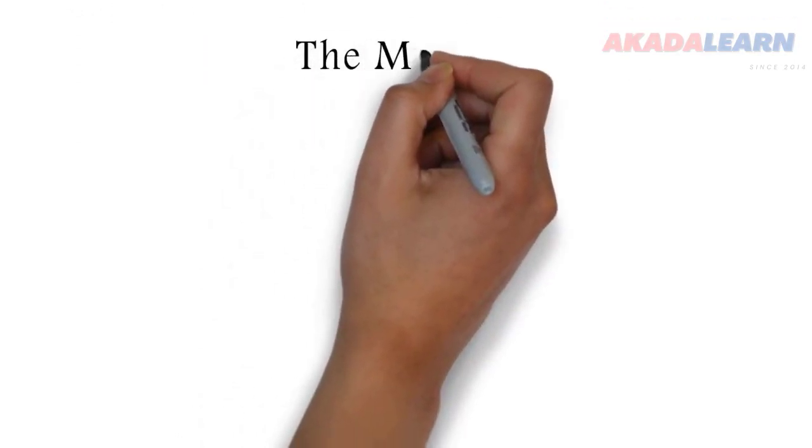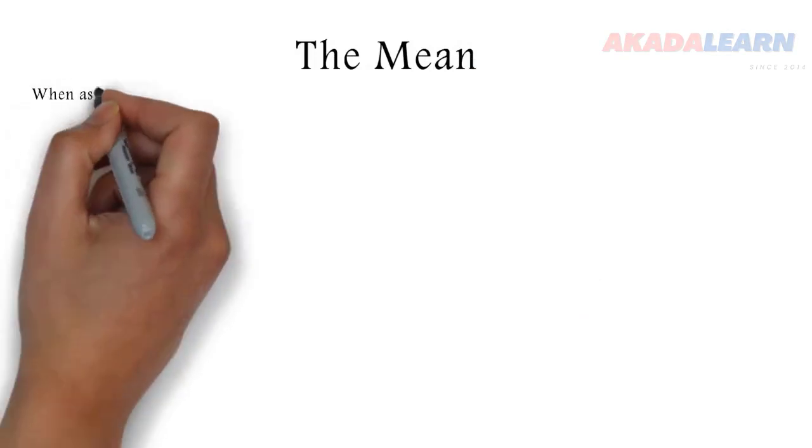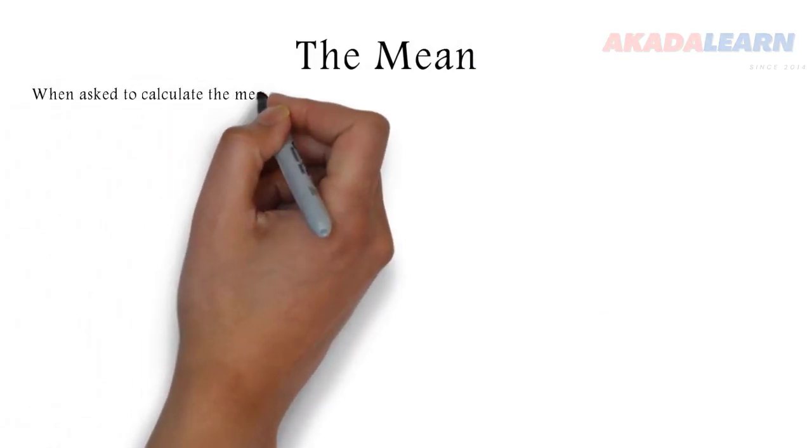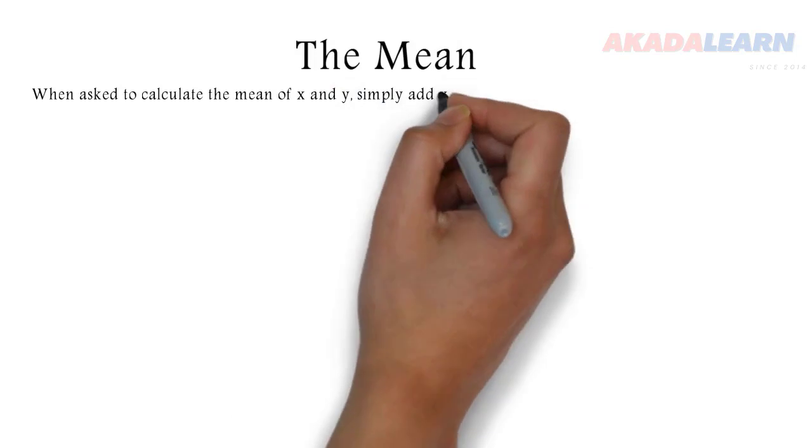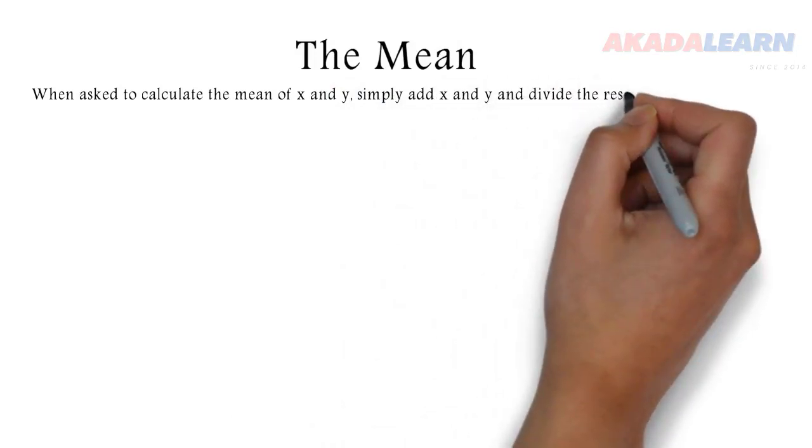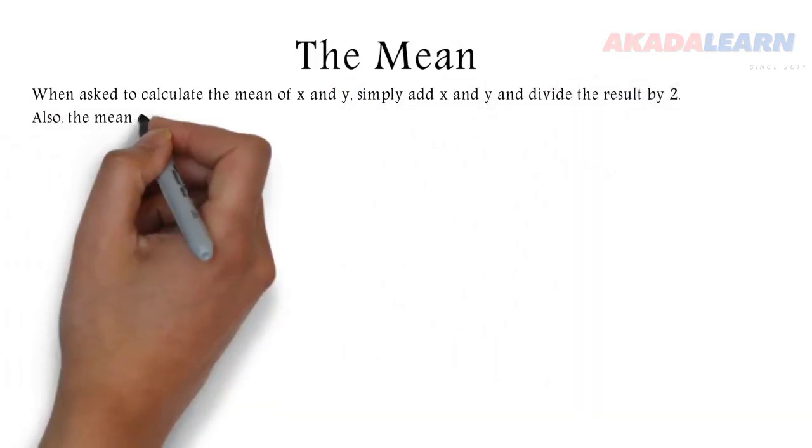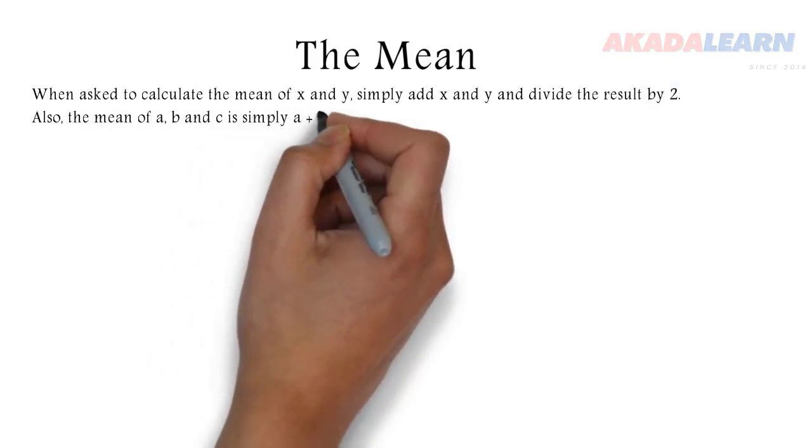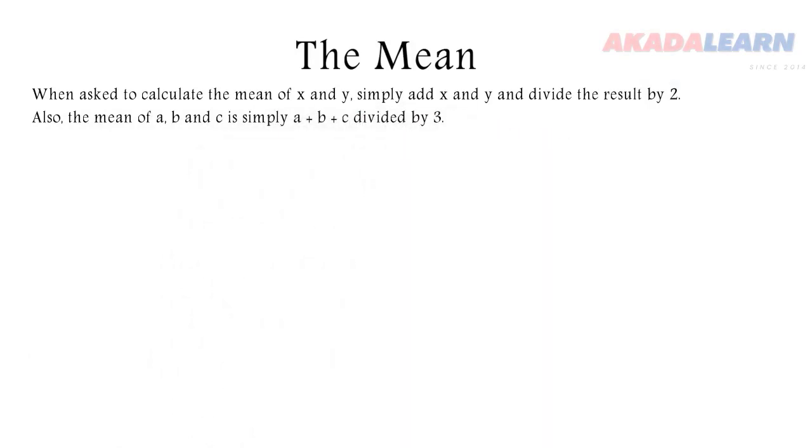Let's start with the mean. If we are given two numbers x and y and asked to look for the mean, we simply add those two numbers then divide by two. If we are given three numbers a, b, c, to find the mean we say a plus b plus c divided by three.